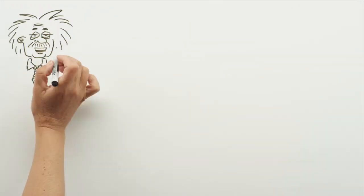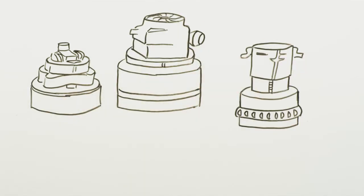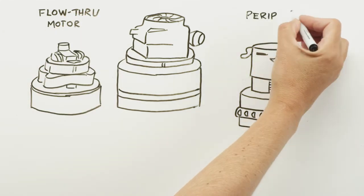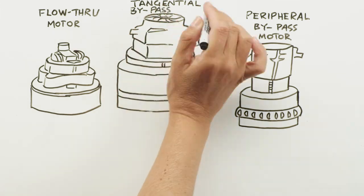Do you remember we asked you which of these three vacuum motors performs best? These three motor types are called the flow-through motor, the peripheral bypass motor, and the tangential bypass motor.